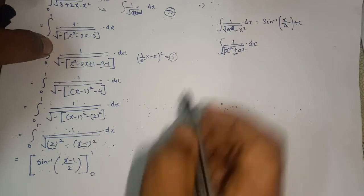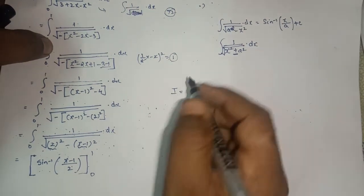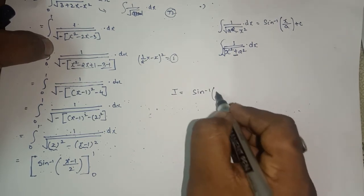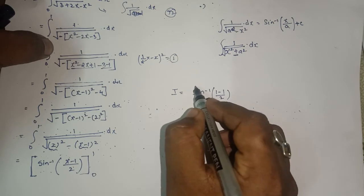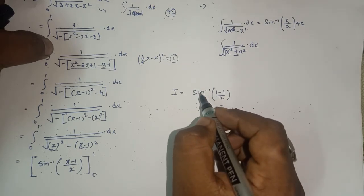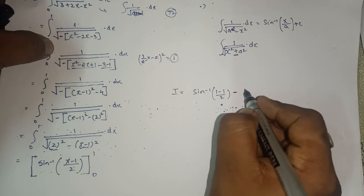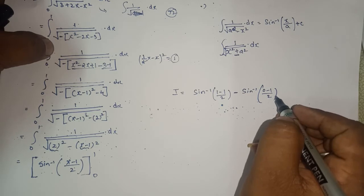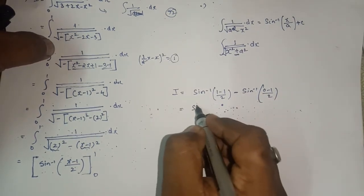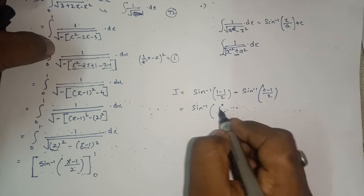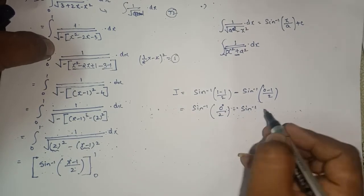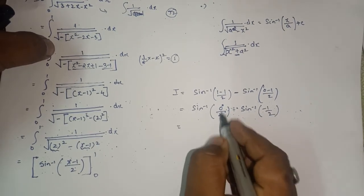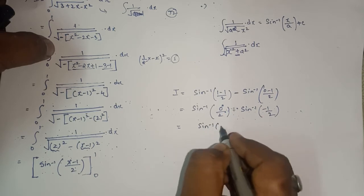Now we know what exactly we have to do. First put the upper limit: (1−1)/2 = 0/2. Then put the lower limit: (0−1)/2 = −1/2. So we get sin⁻¹(0/2) minus sin⁻¹(−1/2). Now 0 divided by any number is 0, so we have sin⁻¹(0) minus sin⁻¹(−1/2).